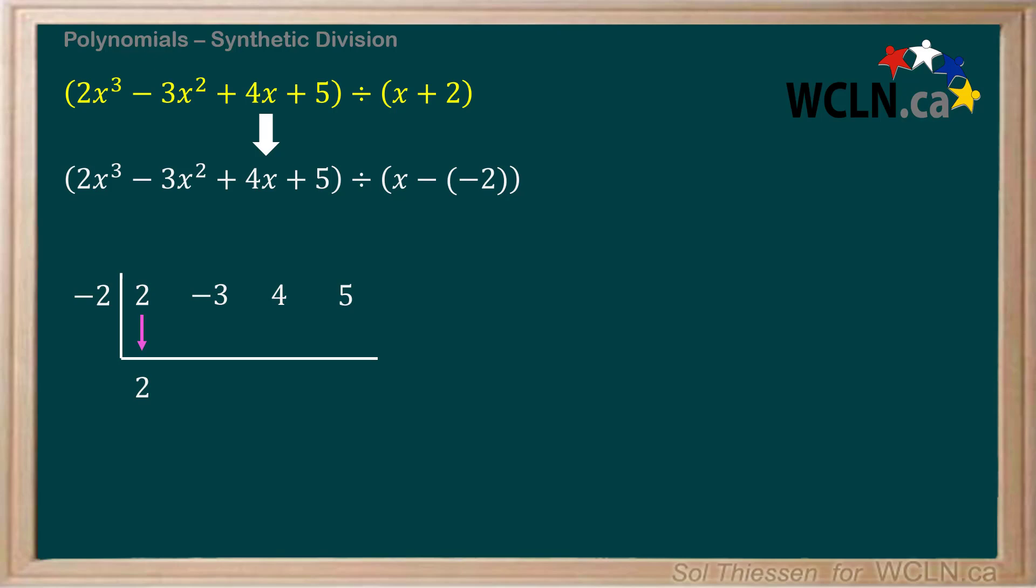Next we multiply the a value, which we got from our divisor, so that's the negative 2 that we have on the left, with the number that we've just dropped down, which is positive 2. Their product is negative 4, which we write in the lower half of the box underneath the next coefficient.